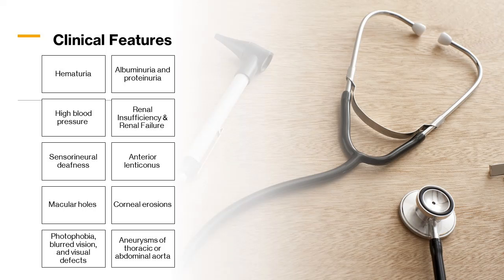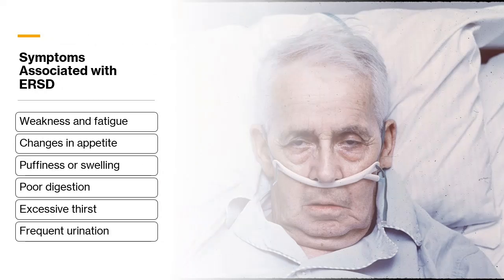Recurrent corneal erosions causing discomfort or severe eye pain, photophobia, blurred vision, foreign body sensation, and visual defects may occur. Additional symptoms may include aneurysms of the thoracic or abdominal aorta. The symptoms associated with end-stage renal disease are weakness and fatigue, changes in appetite, puffiness or swelling, poor digestion, excessive thirst, and frequent urination.